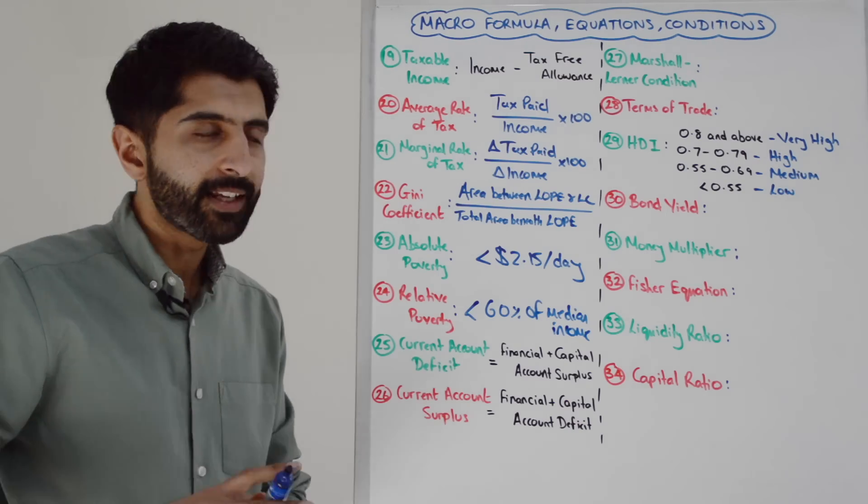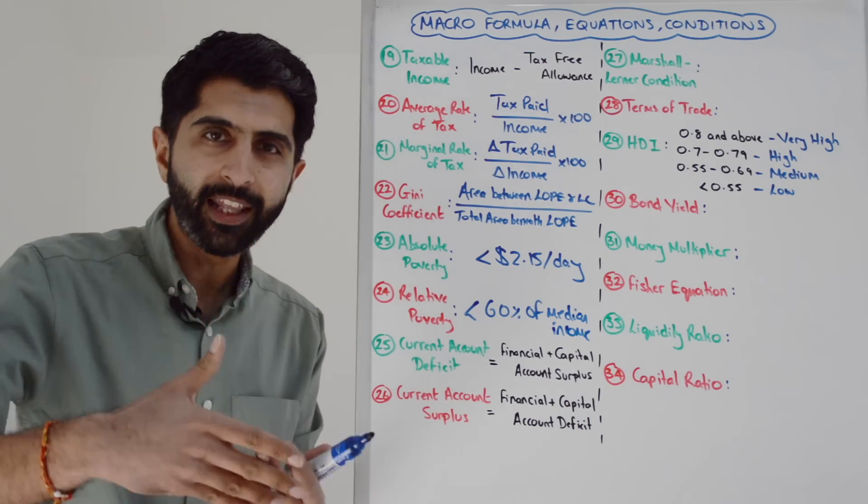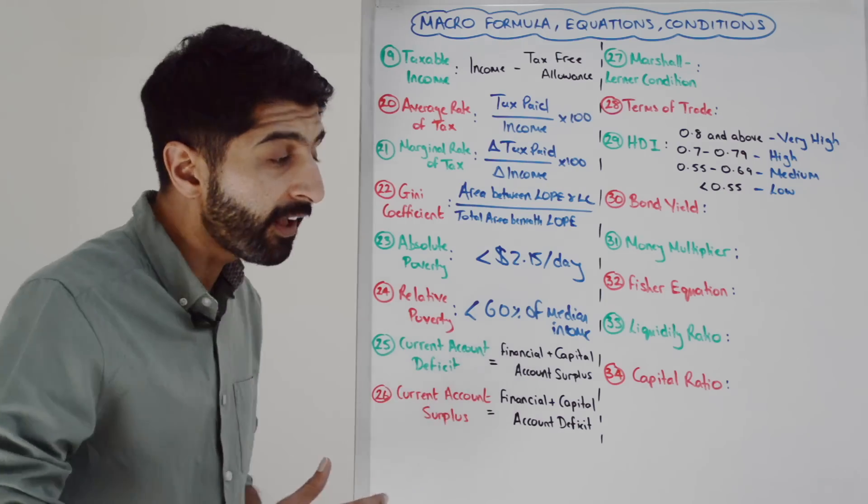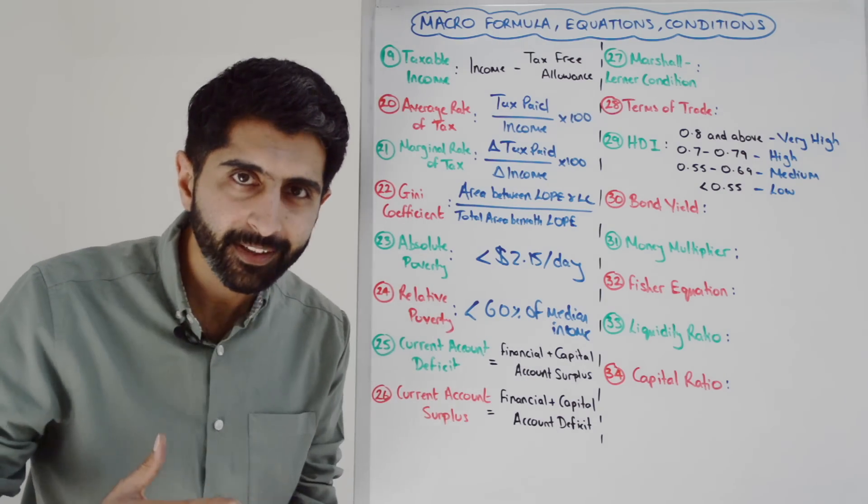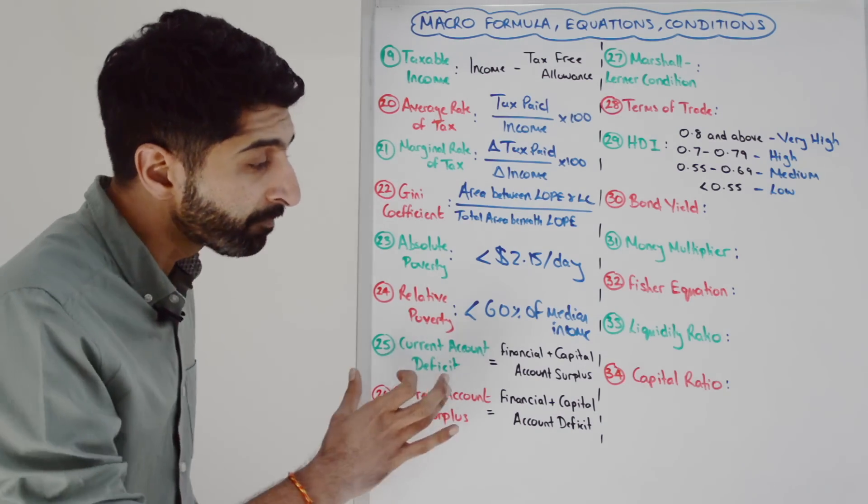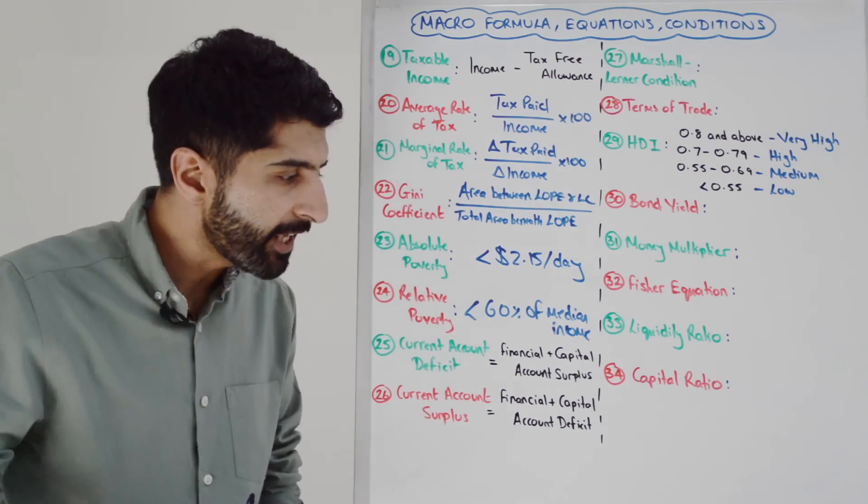The balance of payments must balance. Countries running current account deficits must have a financial plus capital account surplus that offsets the size of the current account deficit. For countries with a current account surplus, they must run an equal financial plus capital account deficit to balance the balance of payments.